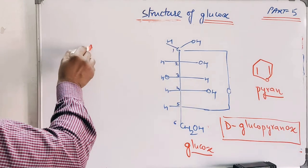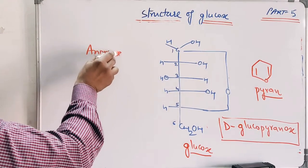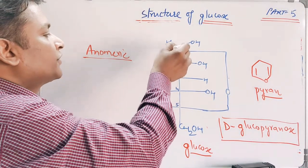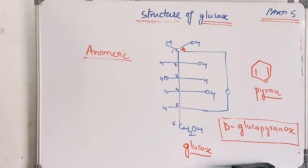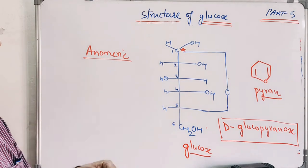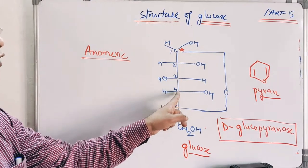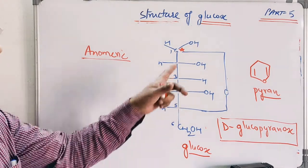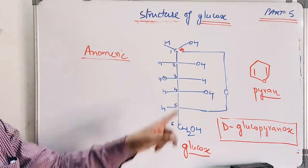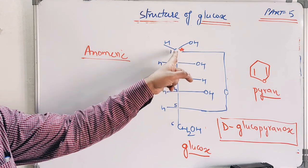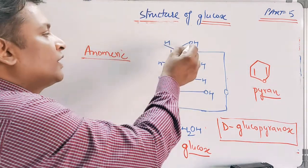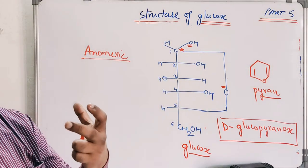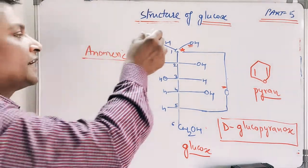One very important point remaining in the discussion is the concept of the anomer or anomeric center. You can see that this carbon is a chiral center. Initially glucose had four chiral centers, but in the cyclic structure an additional chiral center is generated, giving five total. This new chiral center is C1, which is attached to two oxygen atoms — one from the ring oxygen and one from the OH group. A carbon atom attached to two oxygens is called the anomeric center.